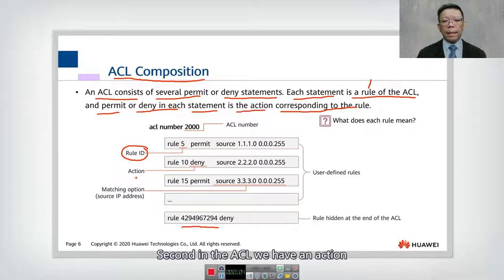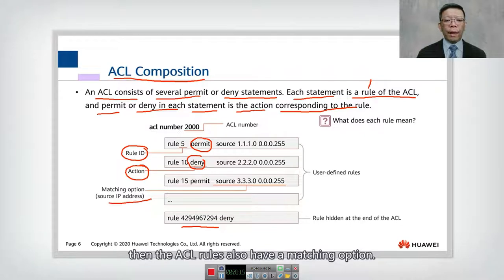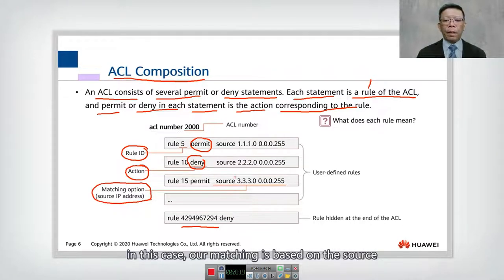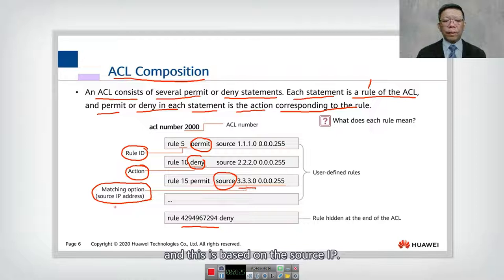Second, in the ACL, we have an action. There are two actions you have to be aware. One is deny, another one is permit. Then the ACL rules also have a matching option. In this case, our matching is based on the source. And this is based on the source IP. So we have the source IP over here.